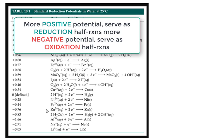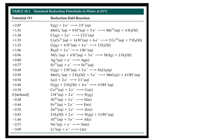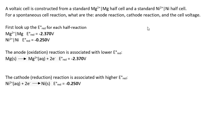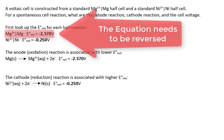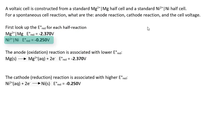The higher the potential, the more likely the reaction will be a reduction reaction. So we can conclude that the magnesium half-reaction will in fact become an oxidation half-reaction, and the nickel half-reaction will be the reduction half-reaction. Oxidation occurs at the anode and reduction occurs at the cathode of an electrochemical cell.